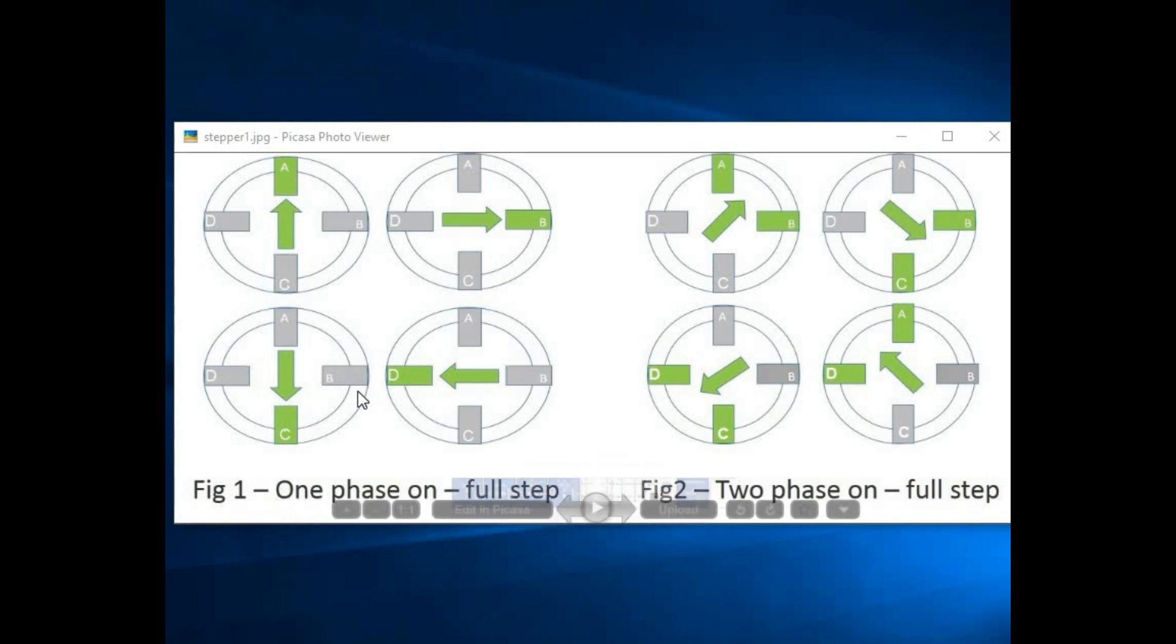This picture shown here is one phase on, that means we energize one coil at a time. If we energize two coils at a time, then also we can rotate the rotor. Here we can see if we energize coil A and B at a time, then the rotor will come to the middle point of the coil A and B. Then if we energize coil B and C together, then the rotor will come to the middle point of B and C.